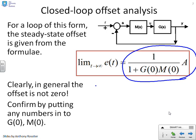So let's put some arbitrary values in. Let's say G of 0 equals 4 and M of 0 equals 6. Then what you get is 1 over 1 plus 24 times A. You will see this is not equal to 0.